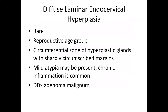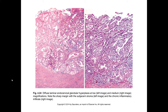Diffuse laminar endocervical hyperplasia is defined as a circumferential zone of hyperplastic glands with very sharply circumscribed margins. A little atypia may be present, some chronic inflammation is commonly seen, and occasionally this enters the differential of adenoma malignum or a very well-differentiated endocervical adenocarcinoma. We see clustered lobulated glands with very sharp demarcation, not much atypia, normal cytoplasmic mucin, and chronic inflammation. The scattered foci of lymphocytic inflammation are a very helpful feature in these lesions.